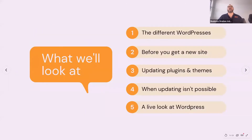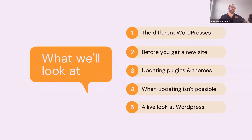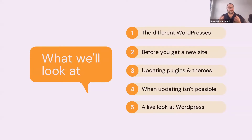We're going to look at how to offset some of that this morning: the different kinds of WordPress and which one you might have; what you should consider when looking to get a new website on WordPress; updating the plugins and themes and what to do when updating isn't possible — maybe your web developer has said don't do it; what you can do to offset security problems when you can't update yourself; and finally, a live look under the hood of a WordPress website.